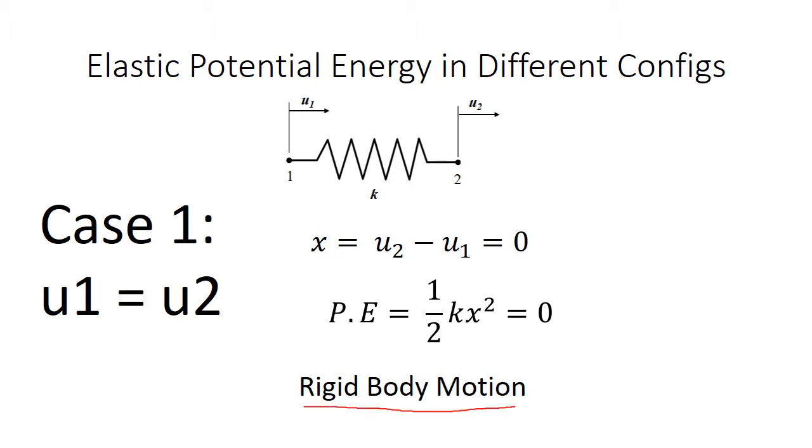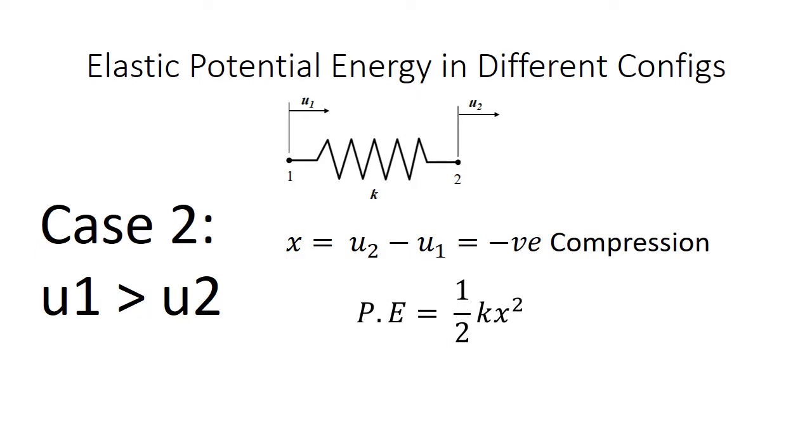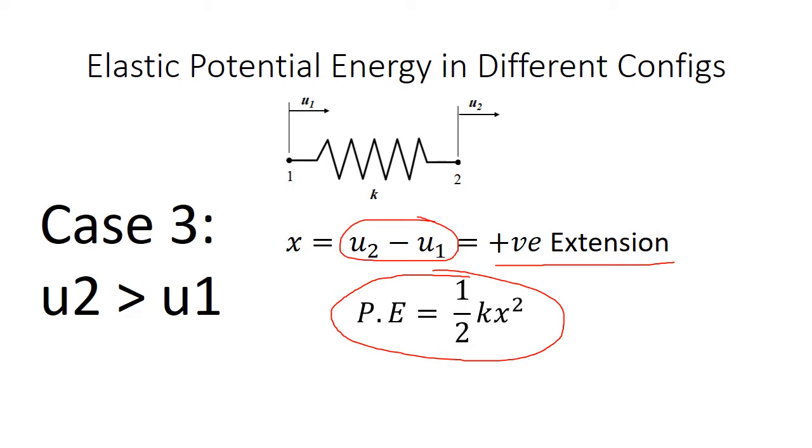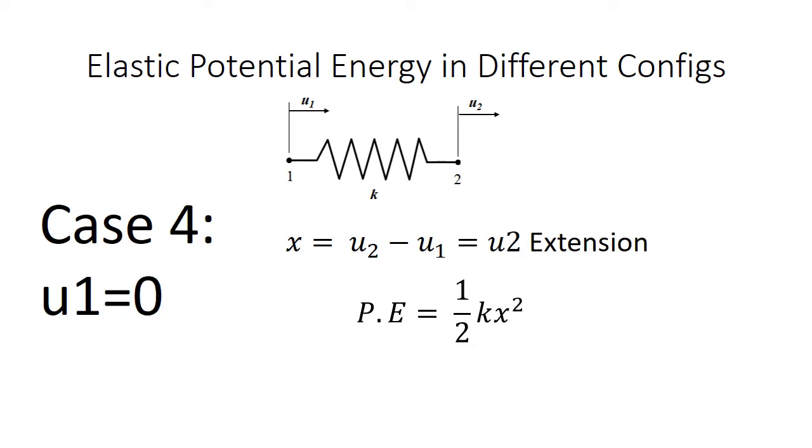Case 2, if U1 is greater than U2, which means that there is a compression of the spring and elastic potential energy is given by half times K times U2 minus U1 the whole squared. Case 3, if U2 is greater than U1, there is an extension of the spring and elastic potential energy is given by half times K times U2 minus U1 the whole squared. For case 2 and 3 elastic potential energy will be the same.